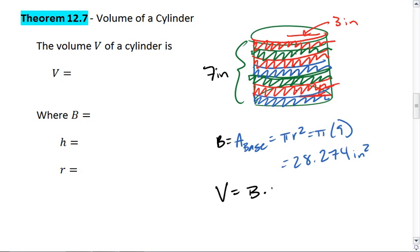So the volume is going to be the area of the base times the height. In this case, 28.274 times 7, which gives us 197.92 inches cubed.